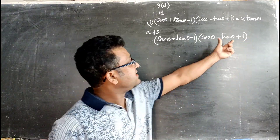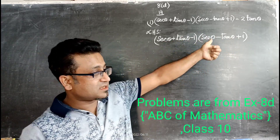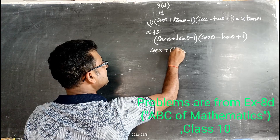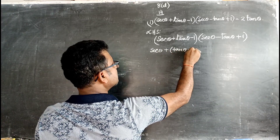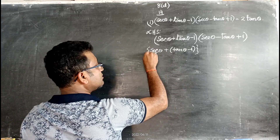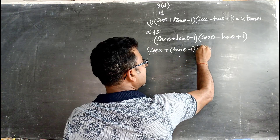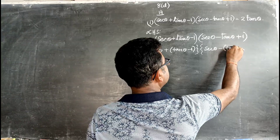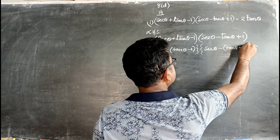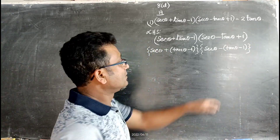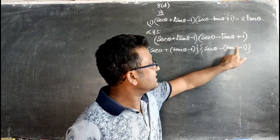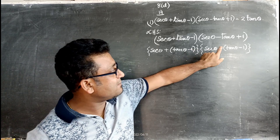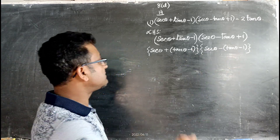If we combine these two we can write in the form (A + B)(A - B). We group tan θ - 1 together, so numerator becomes (sec θ) + (tan θ - 1), and denominator becomes sec θ - (tan θ - 1), giving us A + B and A - B form.